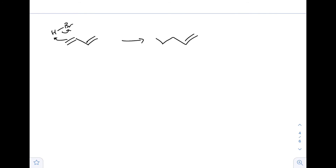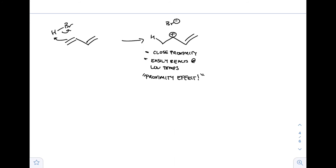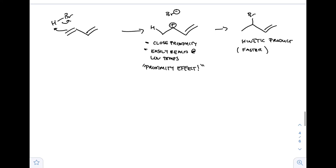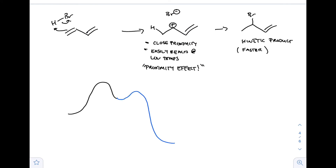Why is B faster? Think about the carbocation formed - think about it as if it were cold, things aren't moving around as fast. Once the H+ adds to the alkene, the bromide is in close proximity and easily reacts at low temperatures - bromide has a negative, the carbocation has a positive, they react readily. The proximity effect is what causes the 1,2-addition product to be the kinetic product and form faster. In order to add H+ to the alkene, the bromine had to come along for the ride and was already there, so it just reacted.